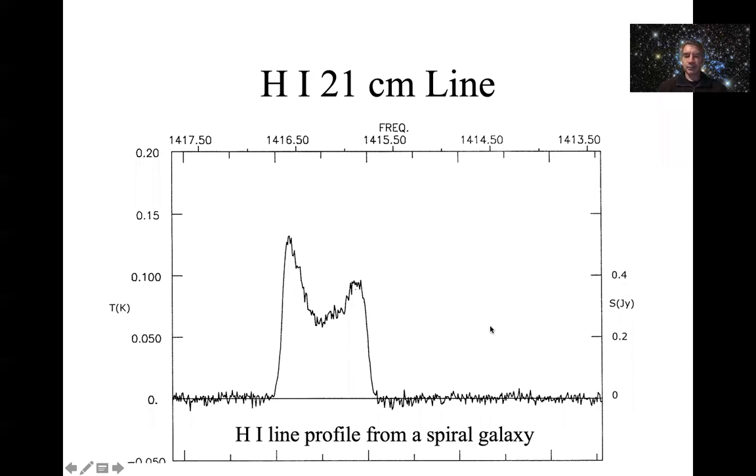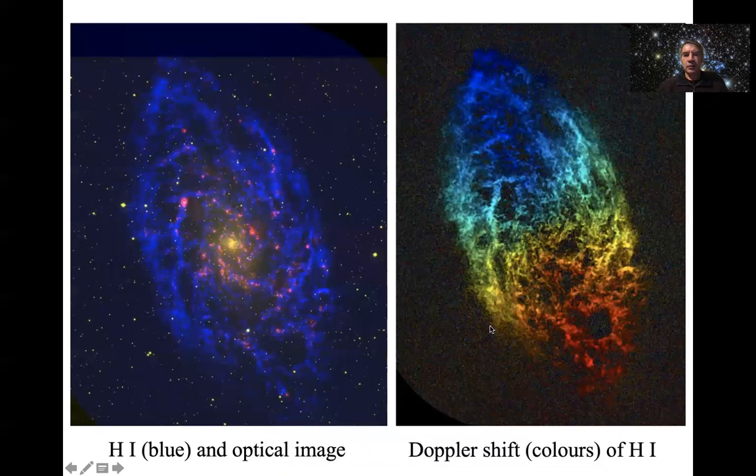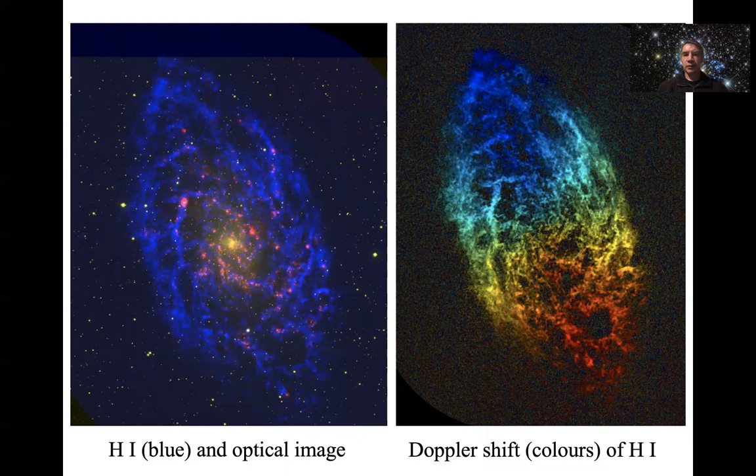That previous one was integrated over the entire galaxy, you get a red peak and a blue peak. That's the HI, and there'll be another whole lecture on HI in galaxies and all the different things you can do with it.